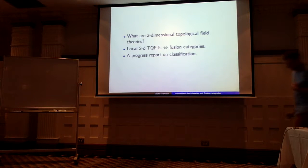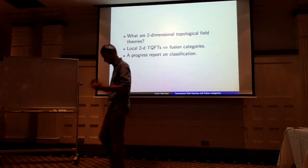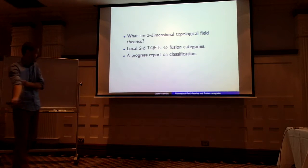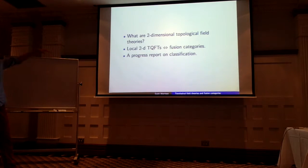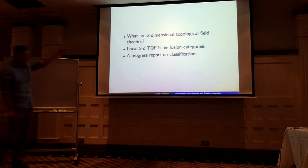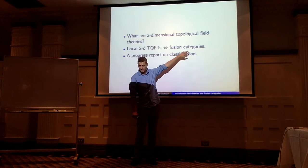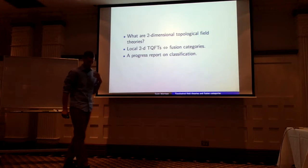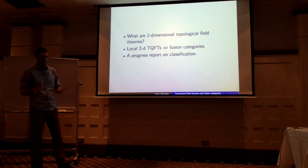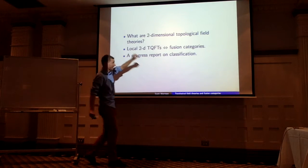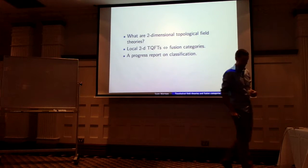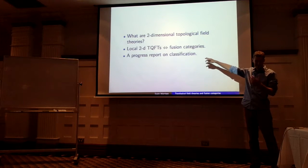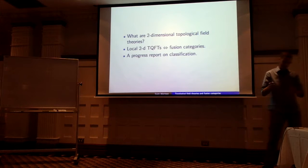So this is the plan of the talk. I want to start right at the beginning and say what is a two-dimensional topological field theory. I then want to explain the correspondence between local 2D TFTs and fusion categories. And then all of that is really motivation for trying to convince you that it's a reasonable thing to think about fusion categories, which are at first sight very algebraic objects. I want to finish off by telling you what we've been learning in the last couple of years about the phenomenology of fusion categories. We're very far from classification in the sense that mathematicians really aspire to, but we have examples and indications of what the story is.